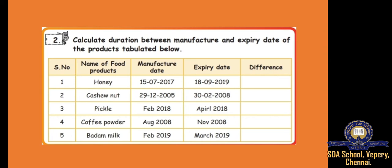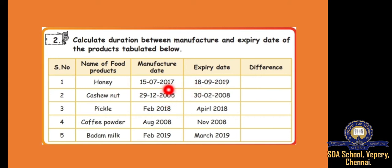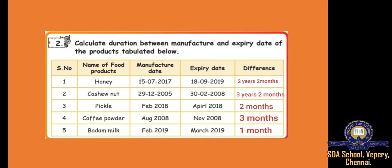They have asked: calculate the duration between manufacture and expiry date of the products. Here are a few products — honey, cashew nut, pickle, coffee powder, badam milk. Honey is manufactured in 2017 and the expiry date is also given. We have to find the difference — how many years difference is there. For example, 2017 to 2019 is 2 years difference. The honey will have 2 years 2 months. Cashew nut will have 3 years 2 months. Pickle will have just 2 months — February 2018 to April 2018. Coffee powder is 3 months. Badam milk — February to March, only 1 month.